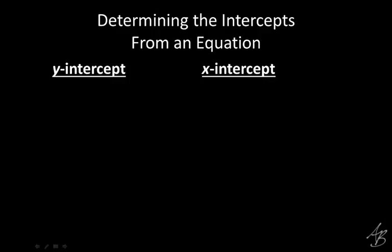The other thing that we did — and we did this in the opener today and in examples one and two yesterday — is we were given an equation that represents a line. We plugged in a certain number for X and a certain number for Y, and that gave us the intercepts. What number do we plug in for X and Y to get those intercepts? Zero. When we want to determine the intercepts using the equation of a line, it's really pretty straightforward.